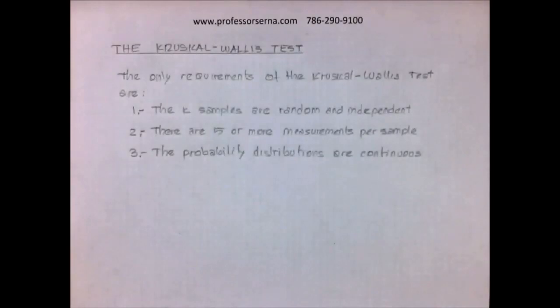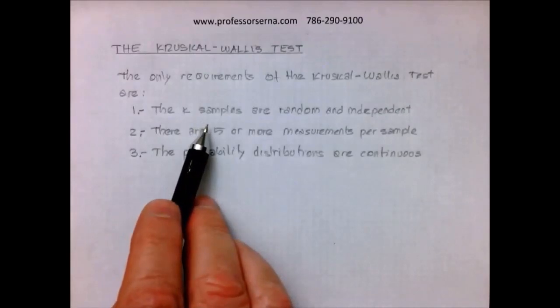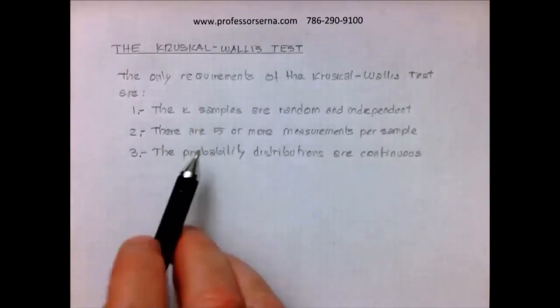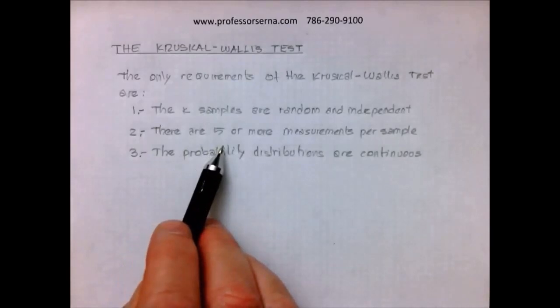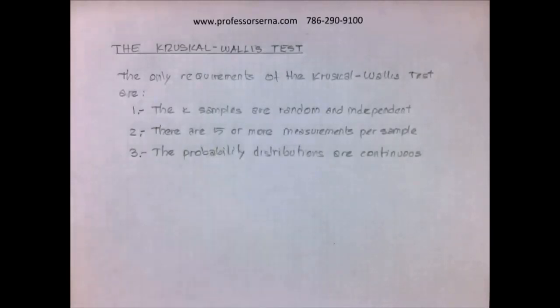The only requirements of the Kruskal-Wallis test are: the k samples are random and independent, there are five or more measurements per sample, and the probability distributions are continuous.